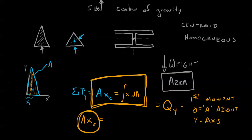You can do the same thing by summing the torques about the X direction. This is the first moment of A about the Y axis. This tells us the location of the centroid. We can divide both sides by A and we can get the location of the centroid.